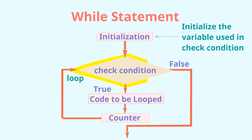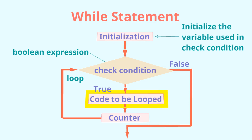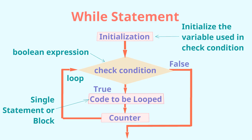Next is the loop condition, which must be a boolean expression — if it is true, then only do you enter the loop. Then comes your block of code which needs to be looped; you can have a single statement or a block within the while loop. The third important component is the counter change statement, which needs to be within your while block. The counter is linked to your loop condition and ensures it changes so that at some point the condition evaluates to false and you exit the loop. Otherwise, you will be stuck in the loop forever.